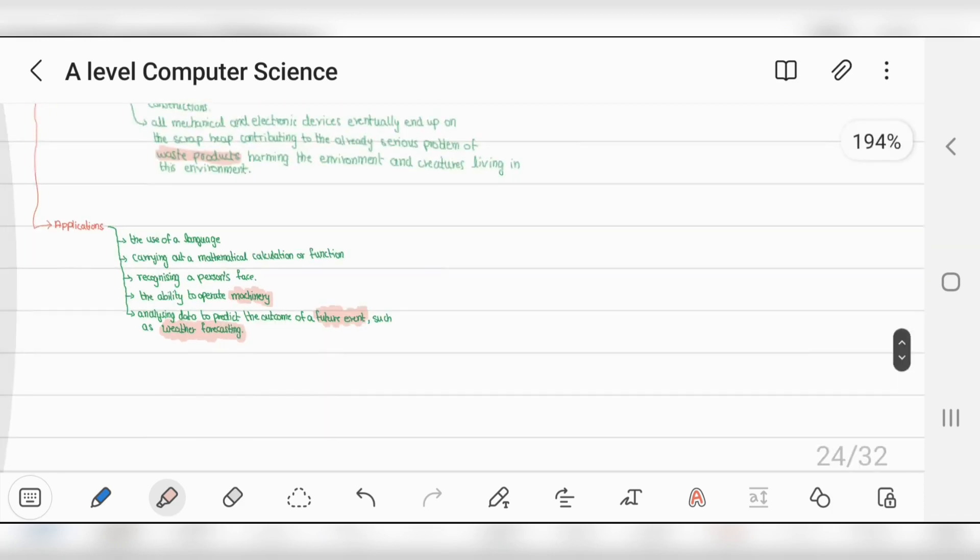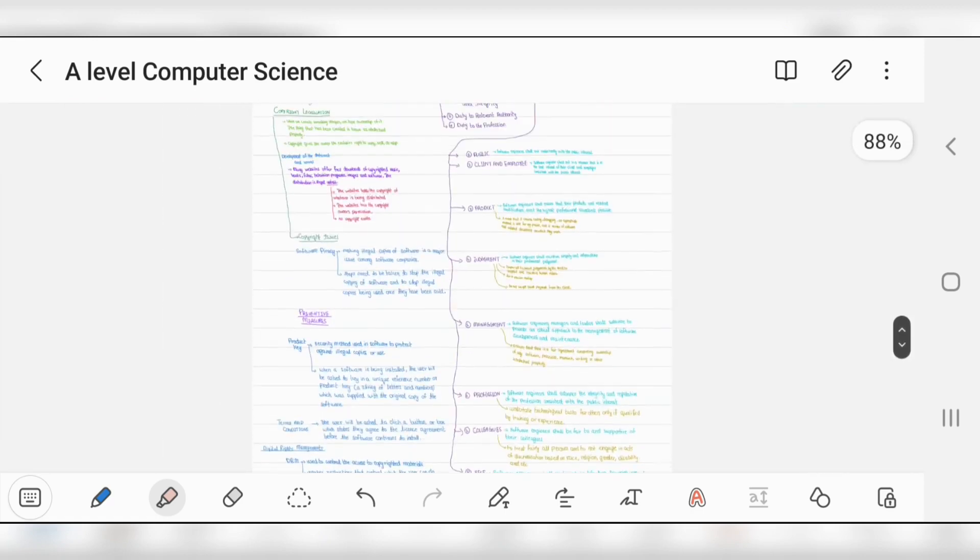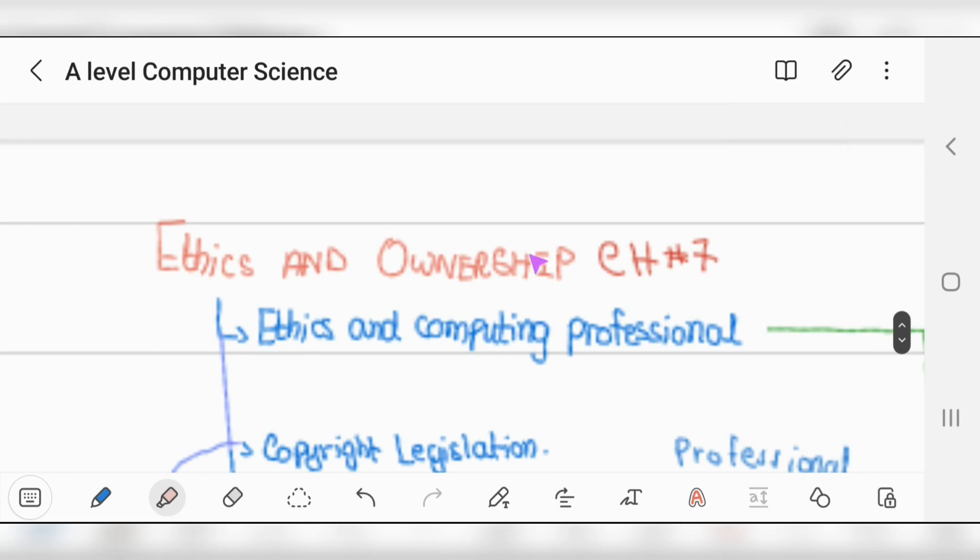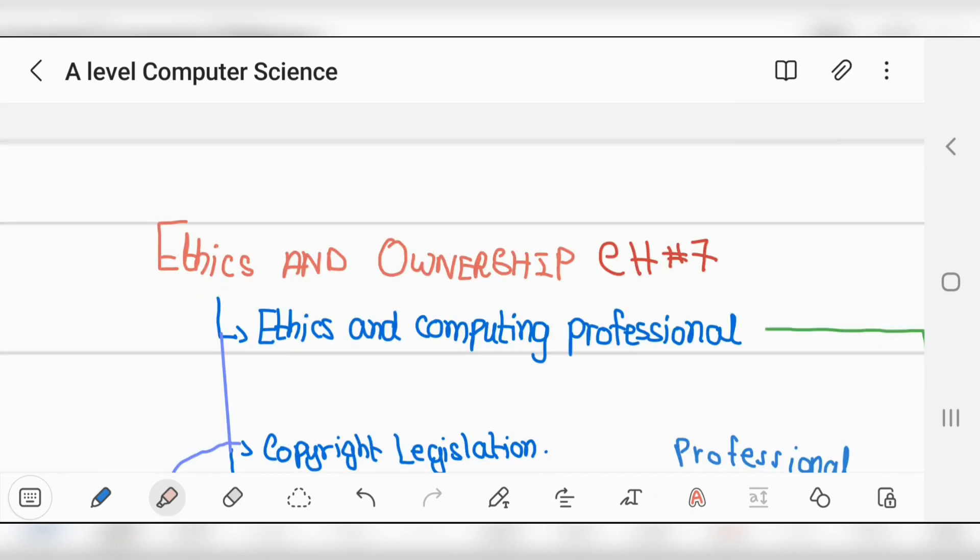This is the end of Chapter 7: Ethics and Ownership. In the next video we'll go to Chapter 6. Thank you so much, goodbye.